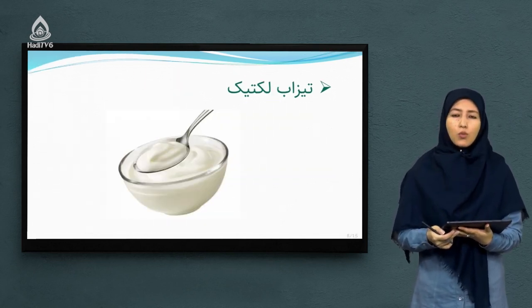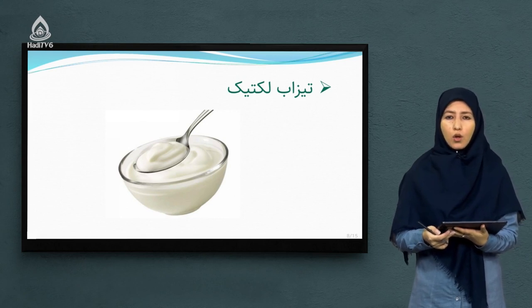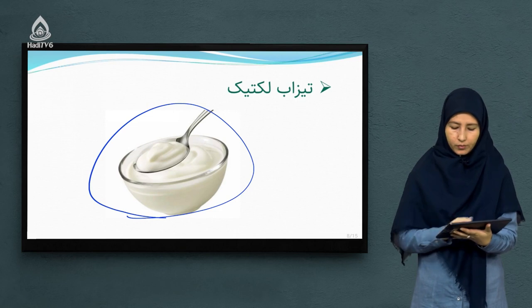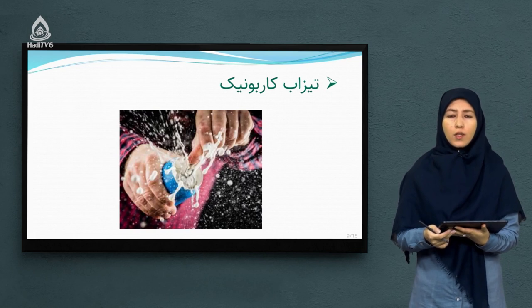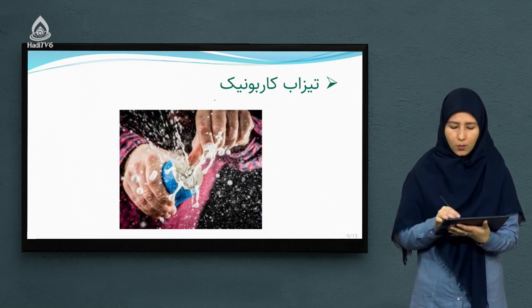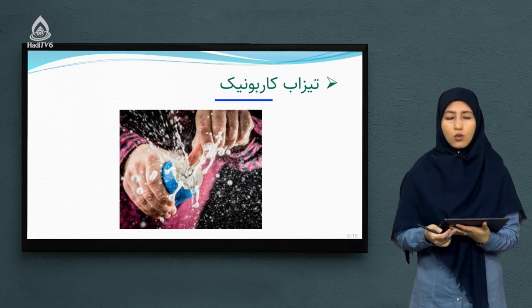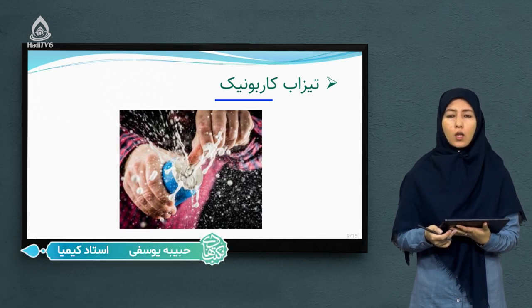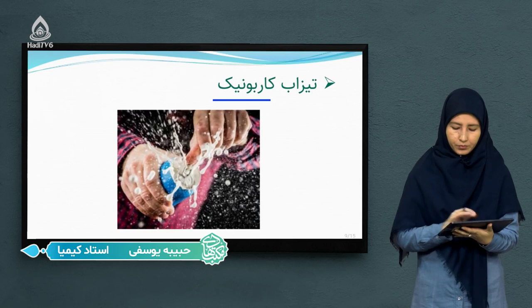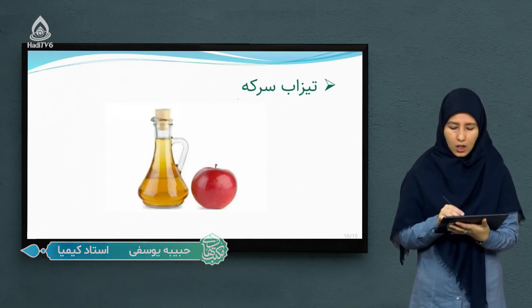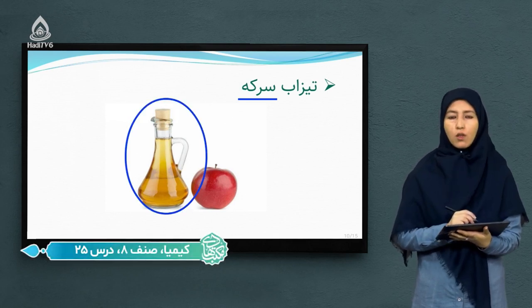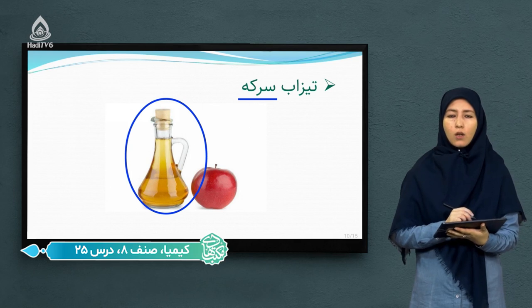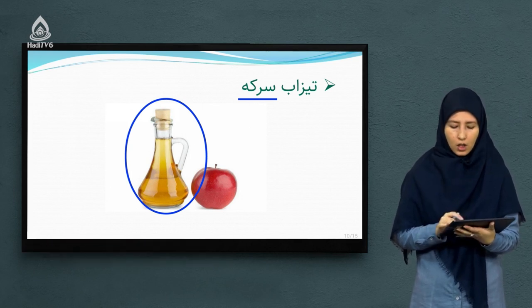تضاب لکتیک از جمله مهم‌ترین تضاب‌هاست که در ساختار ماست یا چکه یافت می‌شود. در نوشابه‌ها یا نوشیدنی‌هایی که استفاده می‌کنید تضابی به نام کاربونیک اسید وجود دارد که از جمله تضاب‌های مهم است. همچنان تضاب سرکه هم از جمله مرکبات تضابی است که در ساختار سرکه یافت می‌شود و از آن در تهیه سالادها و انواع مواد غذایی دیگر استفاده می‌کنیم.